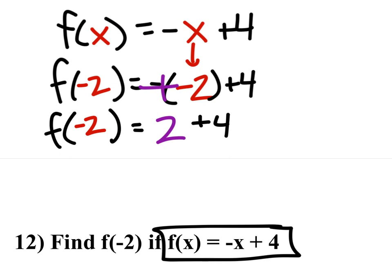So f of negative 2 equals 2 plus 4. So you'll probably want to use your calculator to solve this one, and I got 6.